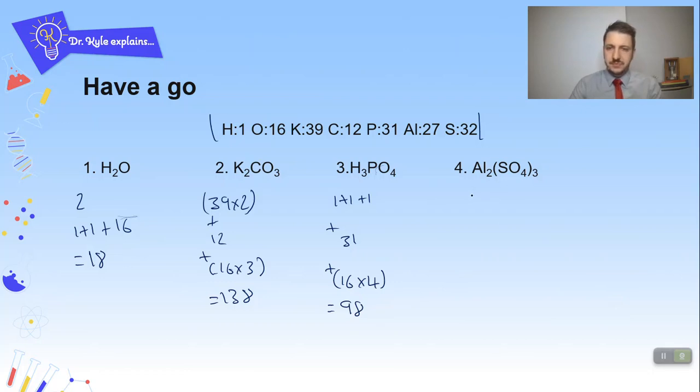And then this one, I've got aluminium. So I've got two aluminiums. 27 times 2 or 2 times 27. Either way you want to do it. Plus. So I've done my aluminiums now. Now I'm looking at my sulfur. Now there's one sulfur here, but because of my brackets, I'm going to times them out. So I've got three sulfurs and I've got 12 oxygens. So here I've got 32 times 3 plus, and then 16 times 12. Keep doing it. Trying to work two hands at the same time. And then that comes out as 342. Really well done if you got those right.